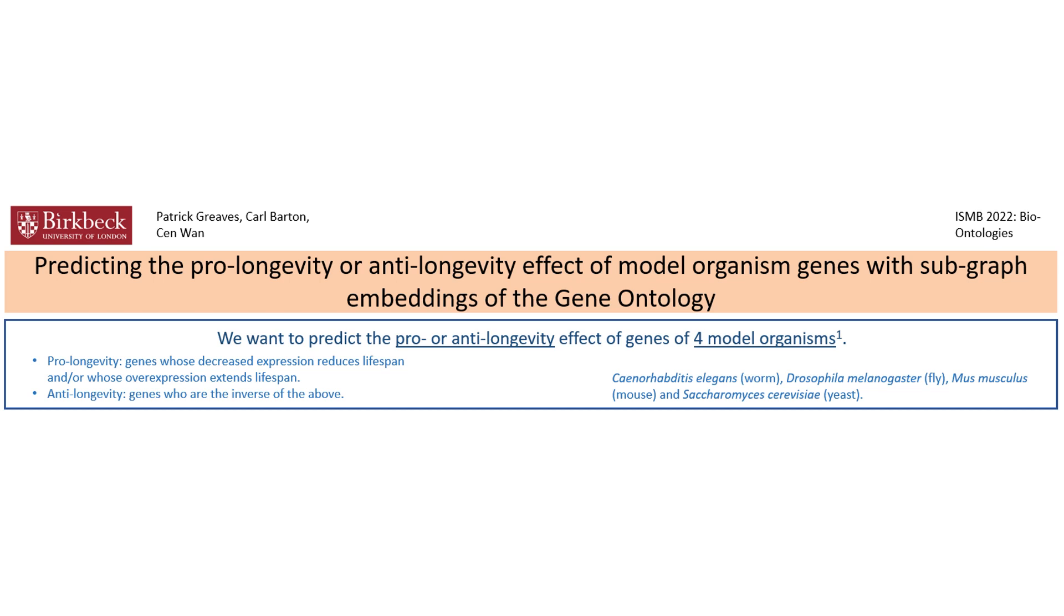This part of the poster defines the terms of the prediction task. We want to predict the pro- or anti-longevity effect of genes on four model organisms. A pro-longevity gene is one whose decreased expression reduces lifespan and or whose overexpression extends lifespan, and an anti-longevity gene is the inverse. The four model organisms for which we're going to predict are the worm, the fly, the mouse and the yeast.